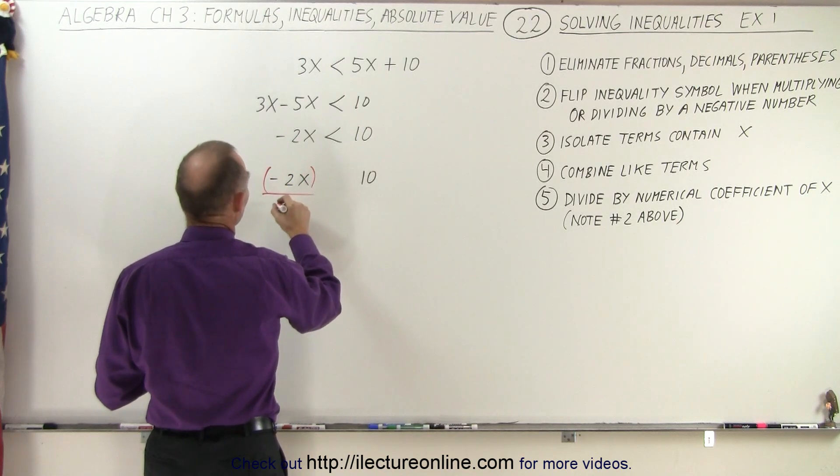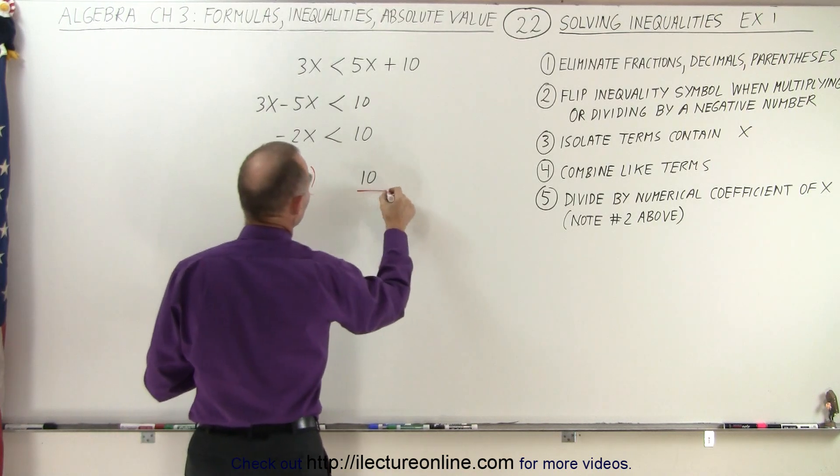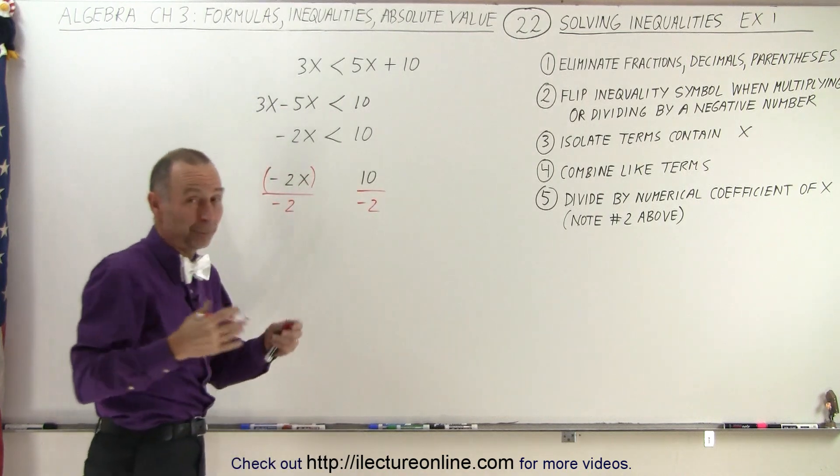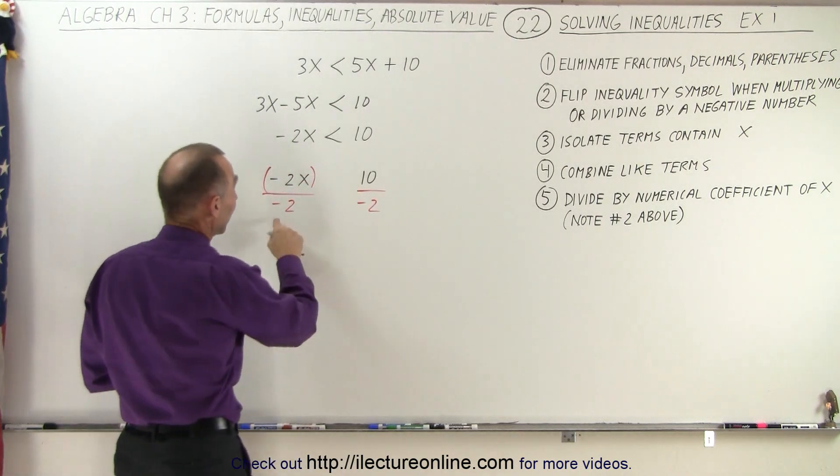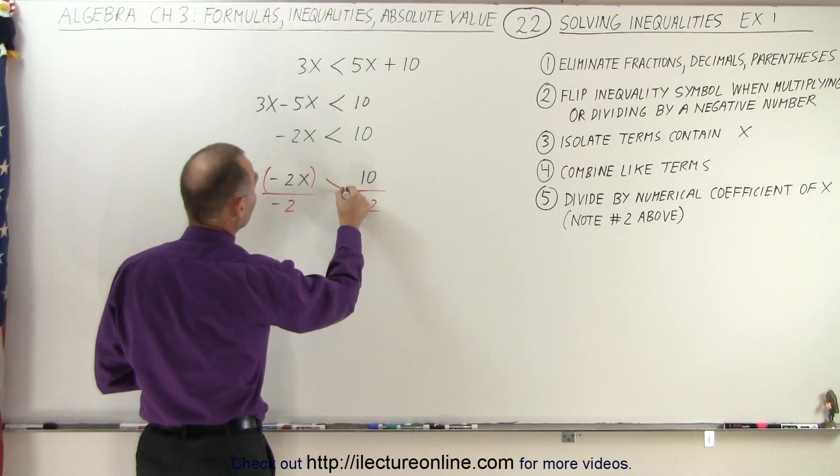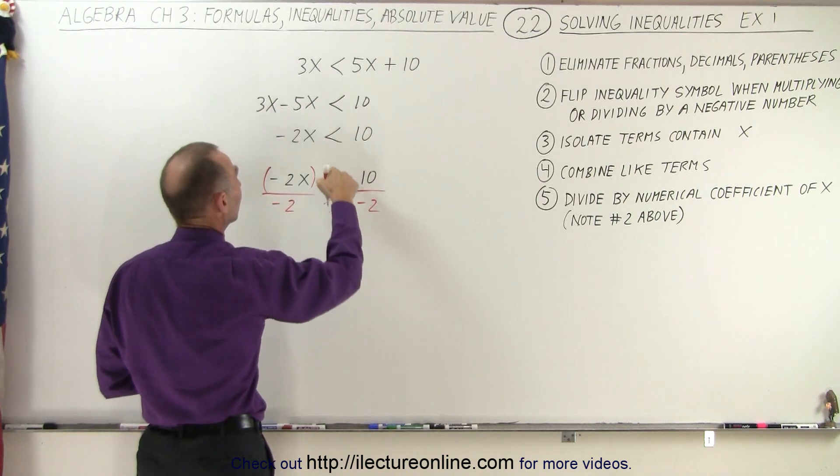We're going to multiply both sides by, or in this case, divide both sides by a negative 2, divided by a negative 2. But now since I'm dividing by a negative number, I need to flip the inequality symbol from less than to greater than.